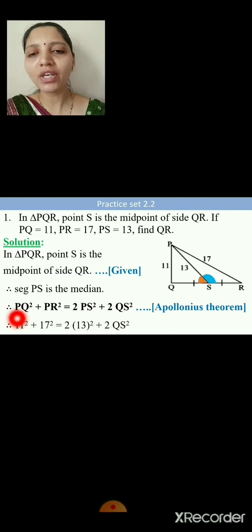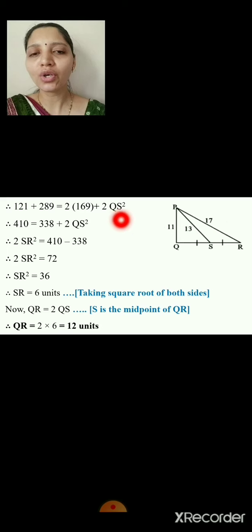Substituting values: PQ = 11, PR = 17, PS = 13 — so 11² + 17² = 2·13² + 2·QS². That gives 121 + 289 = 2·169 + 2·QS², so 410 = 338 + 2·QS². Therefore 2·QS² = 410 − 338 = 72, so QS² = 36, and QS = 6 units (taking square root of both sides).